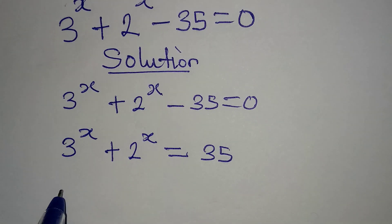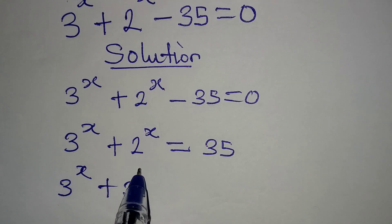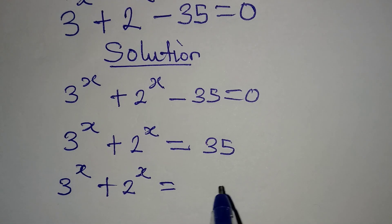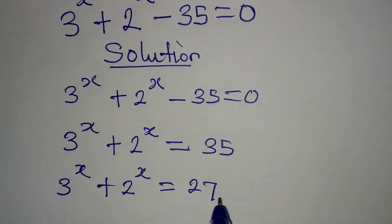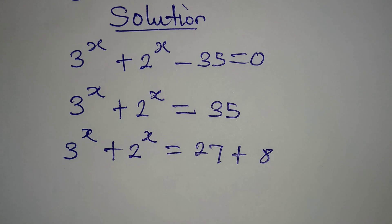This is 3^x + 2^x = 35. I want to break 35 into two numbers: 27 + 8. 27 plus 8 gives us 35, right?